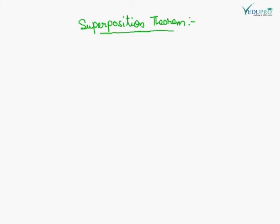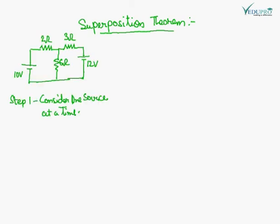This theorem is more applicable when a circuit has more than two sources or generators. What we do is see the effect of each generator one by one, and at the end we add all the currents at that node. Let's take one example.